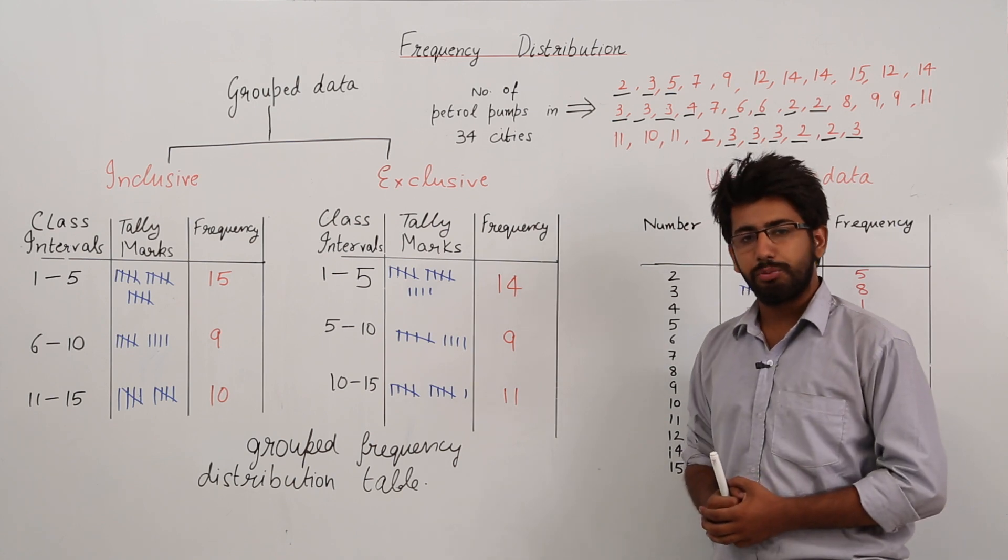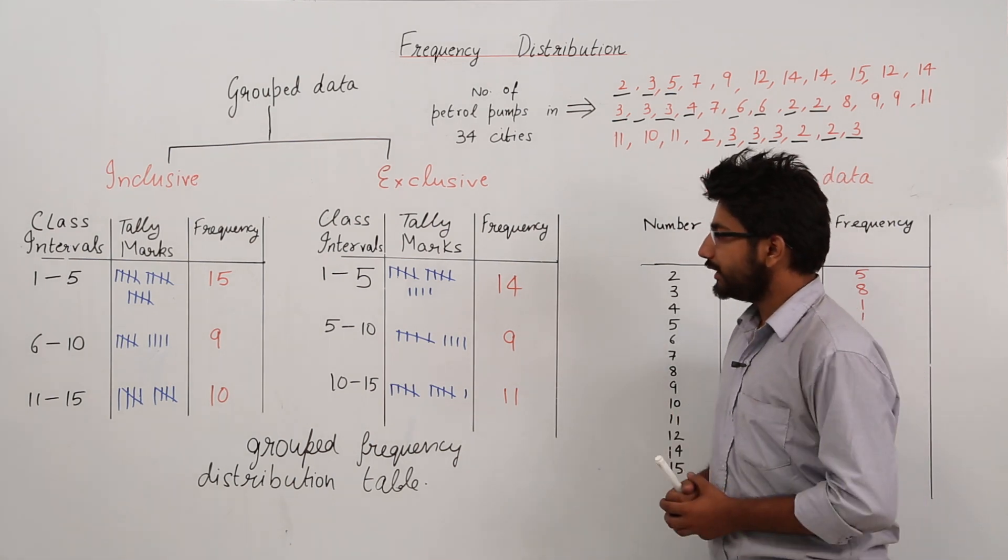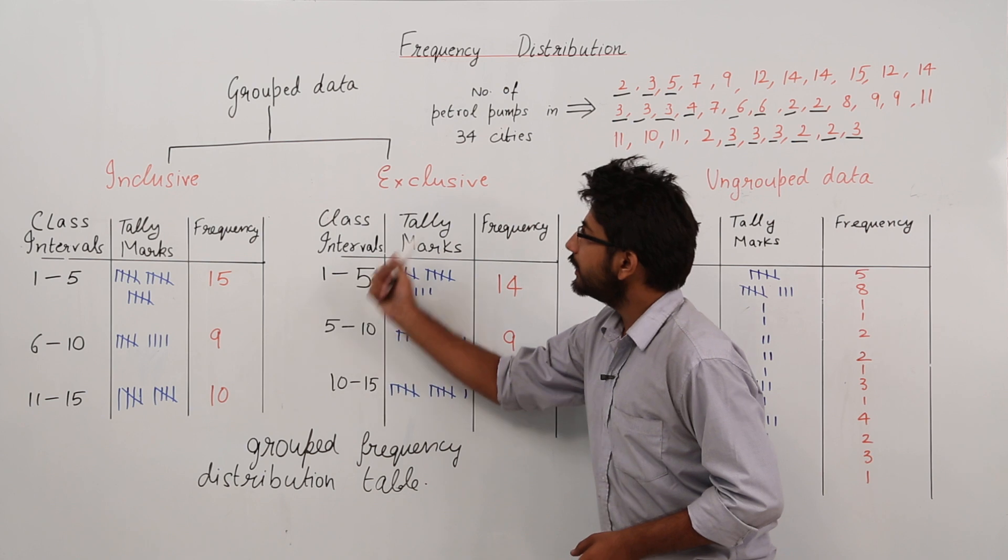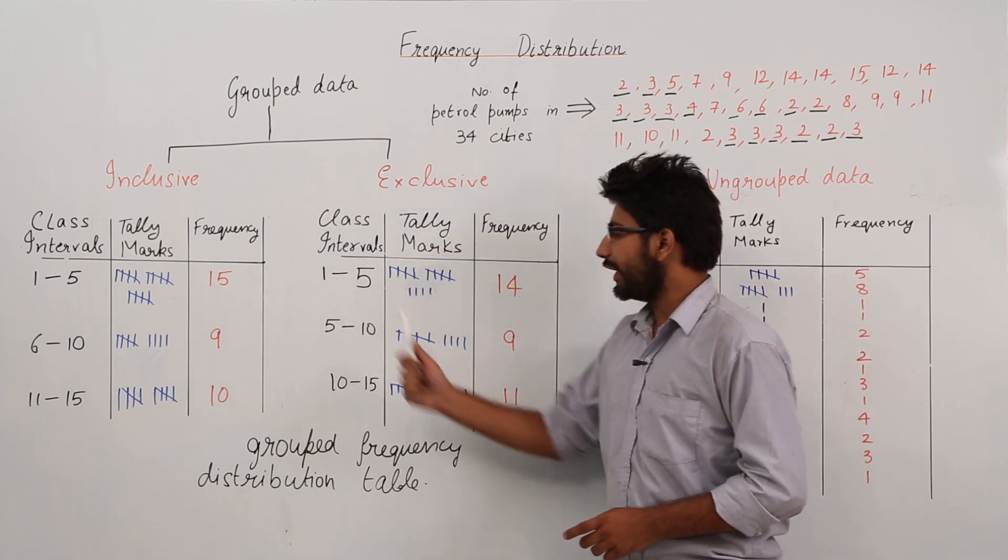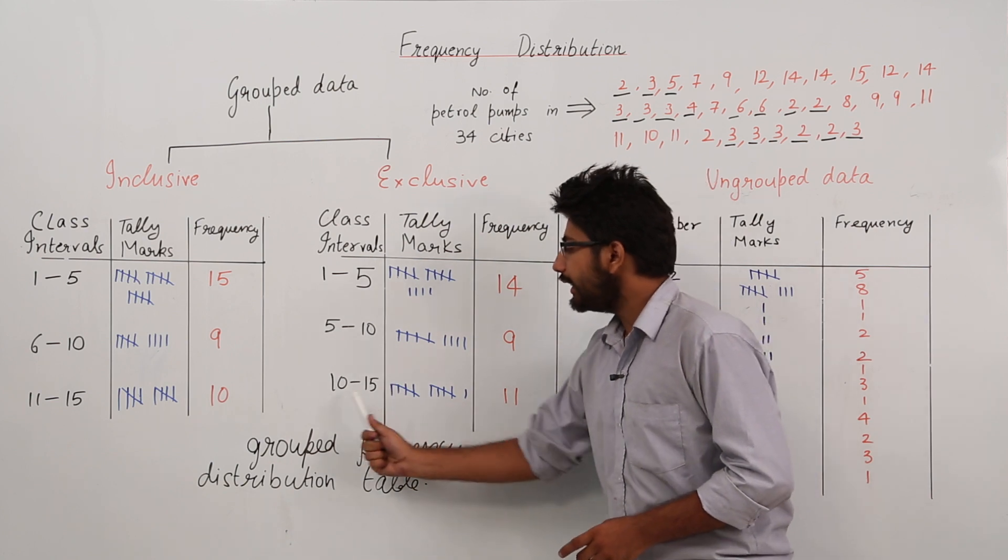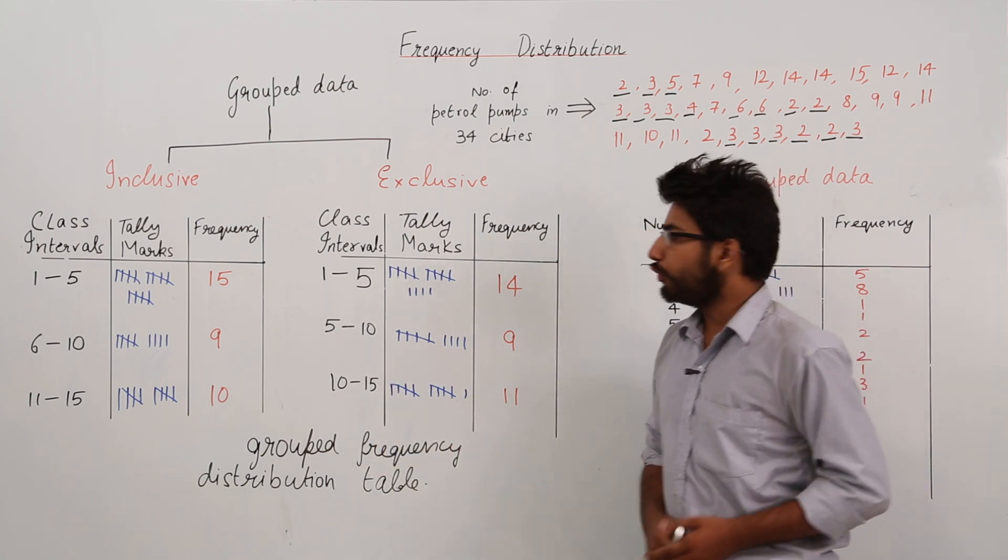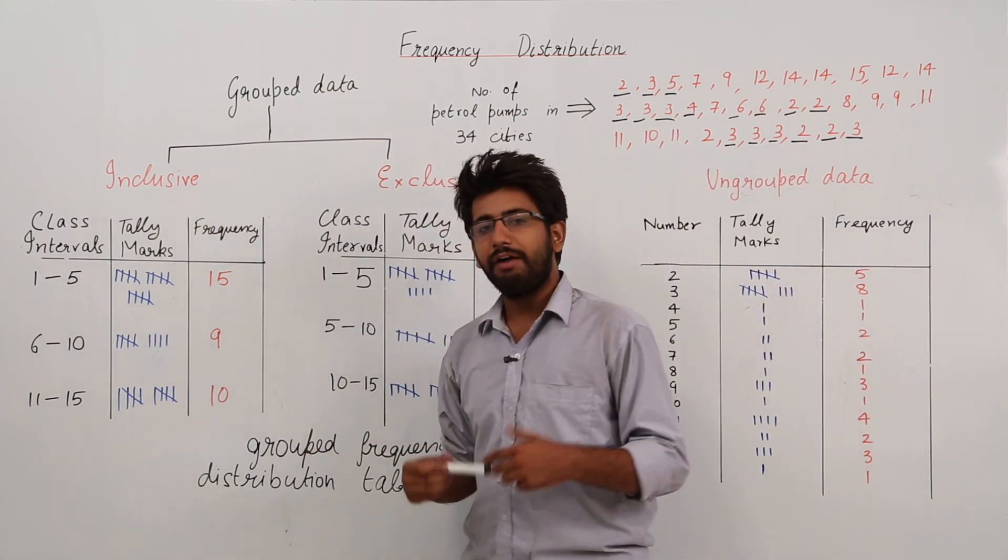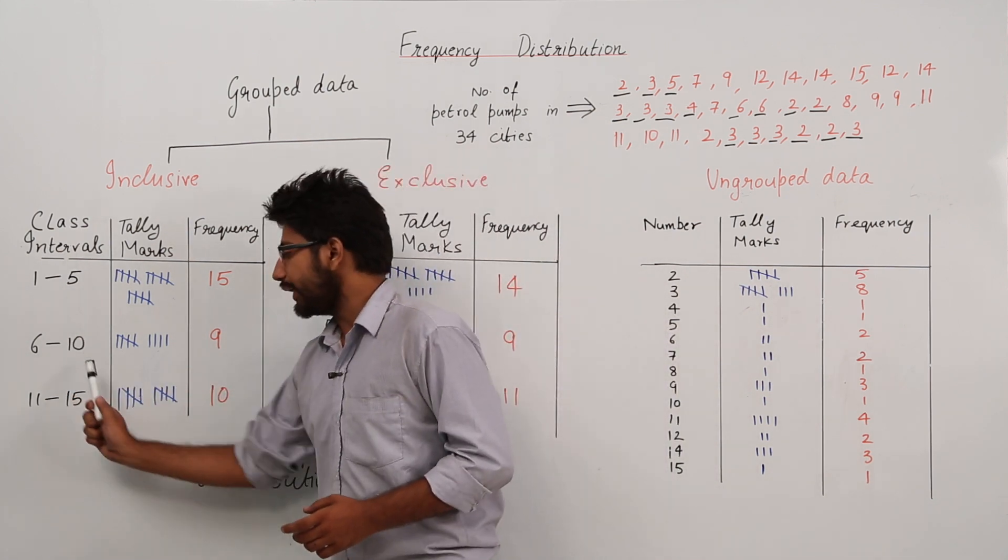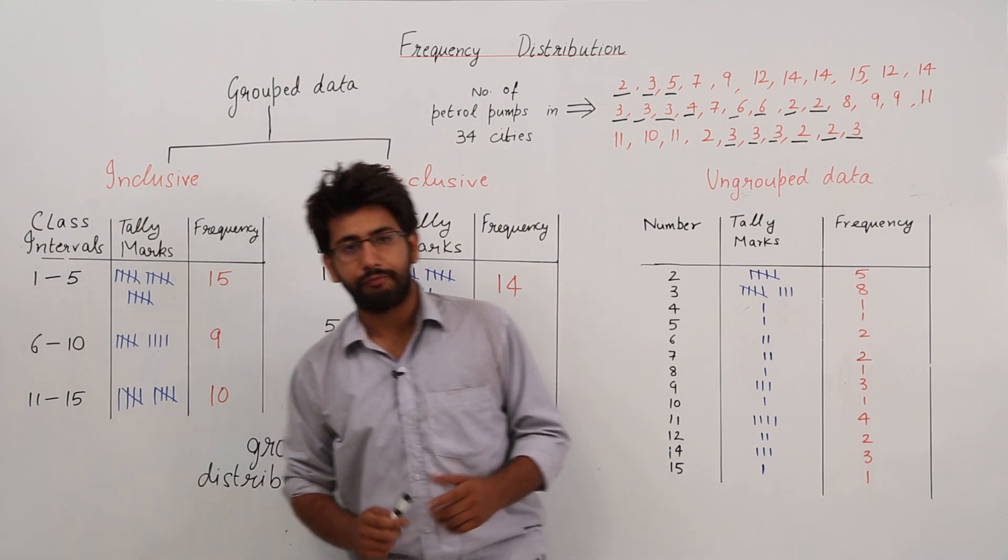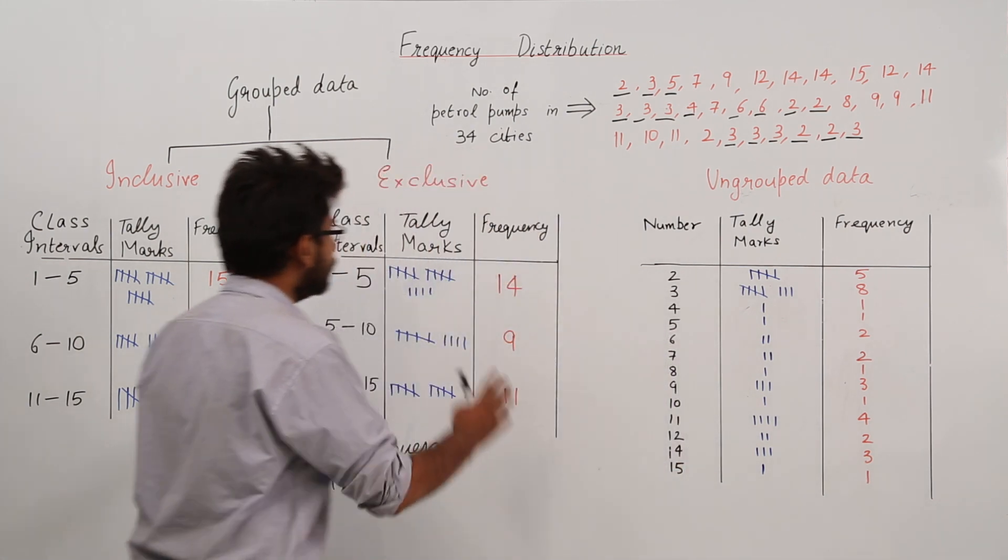We have condensed this data into three groups: one is 1 to 5, 5 to 10, and 10 to 15. Now if you look at the inclusive table, we have made different intervals: 1 to 5, 6 to 10, and 11 to 15.